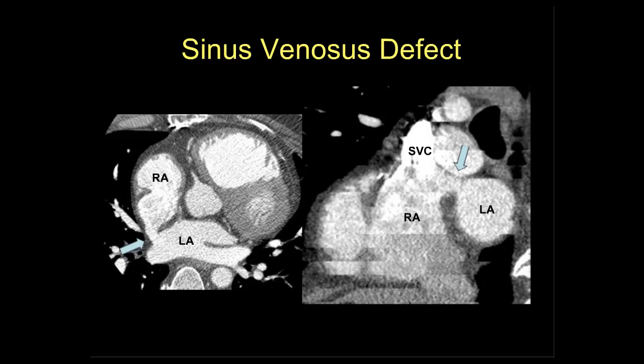This is an example of a patient with a sinus venosus defect. We can see the communication between the superior aspect of the right atrium where the SVC has just entered, and on the coronal reformat we see the SVC and the communication between the right and left atrium. This CT scan was performed to assess for anomalous pulmonary venous return, which the patient also had.